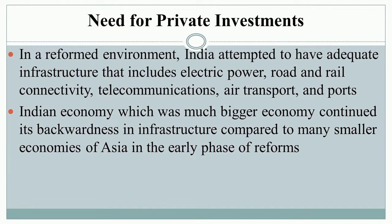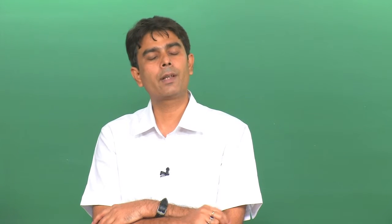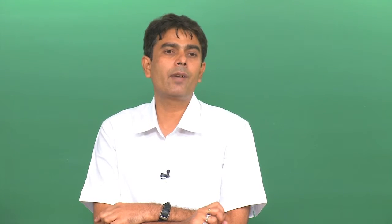The government reduced restrictions in many sub-sectors of infrastructure. The need for private investment was realized because 1991 was the year when the government in India and many developing countries started thinking of moving away from being the sole producer of goods and services, looking for partners in production of infrastructure and manufacturing. In a reform environment, India attempted to have adequate infrastructure including electric power, road and rail connectivity, telecommunication, air transport, and ports.